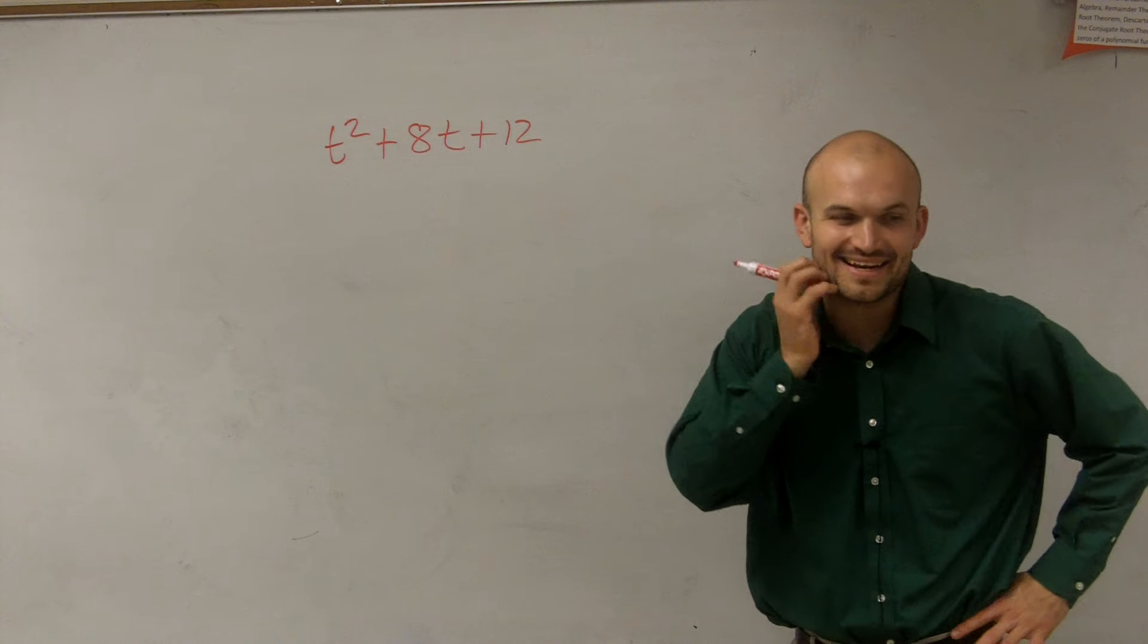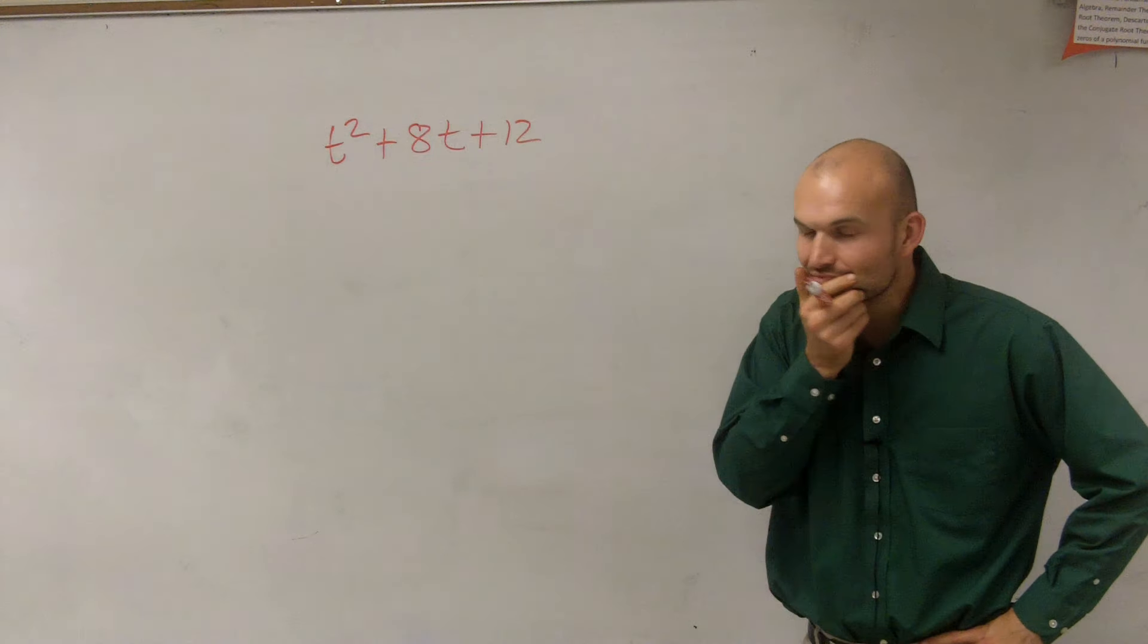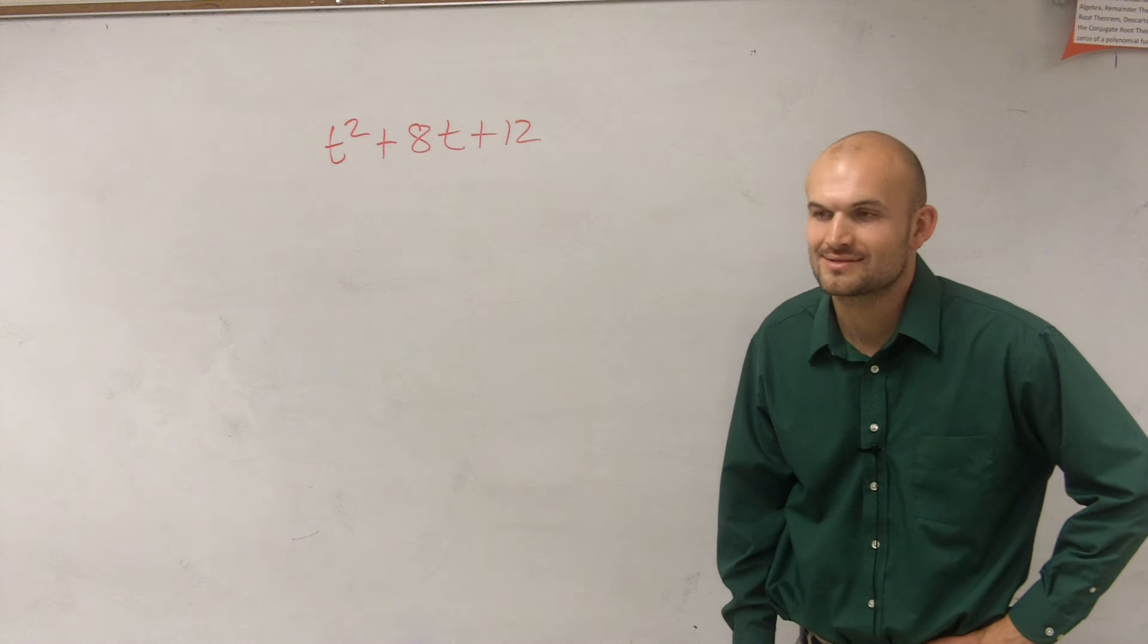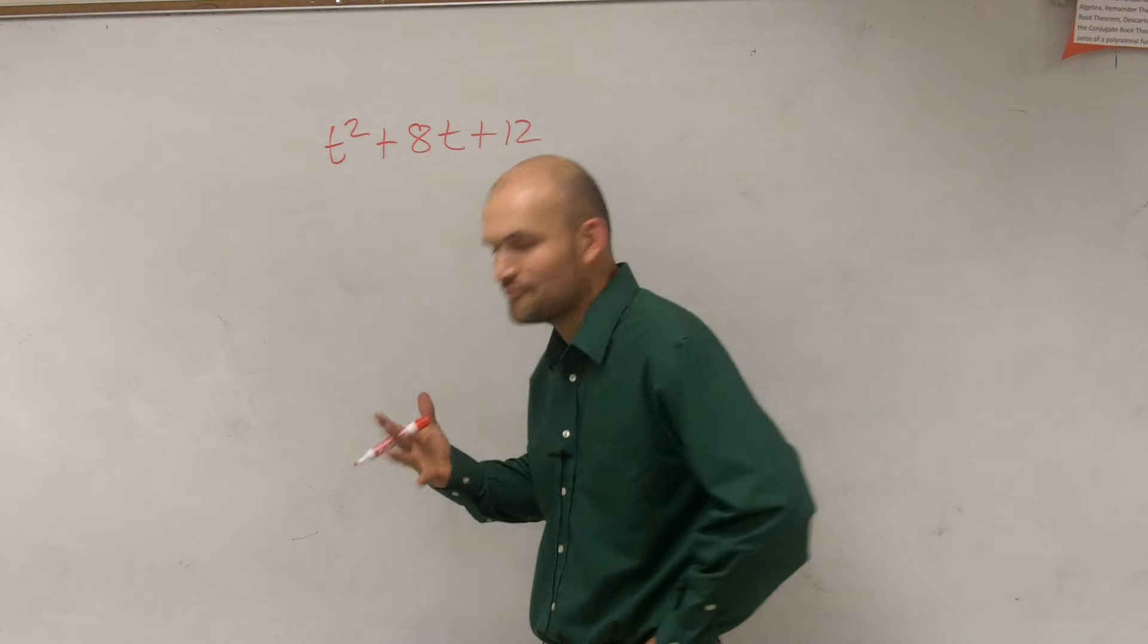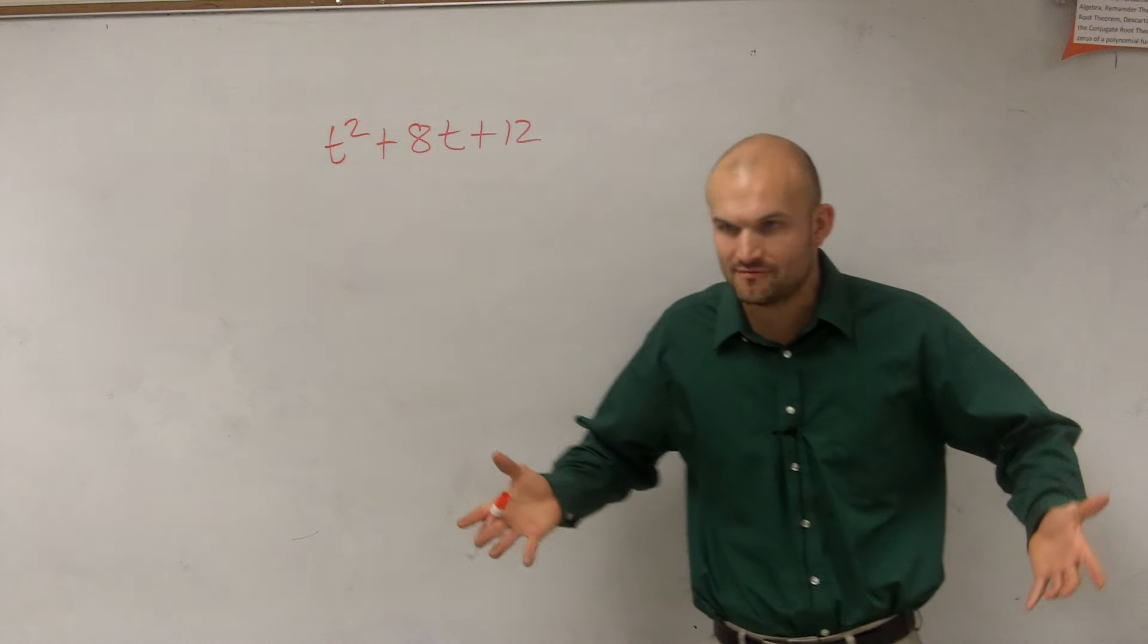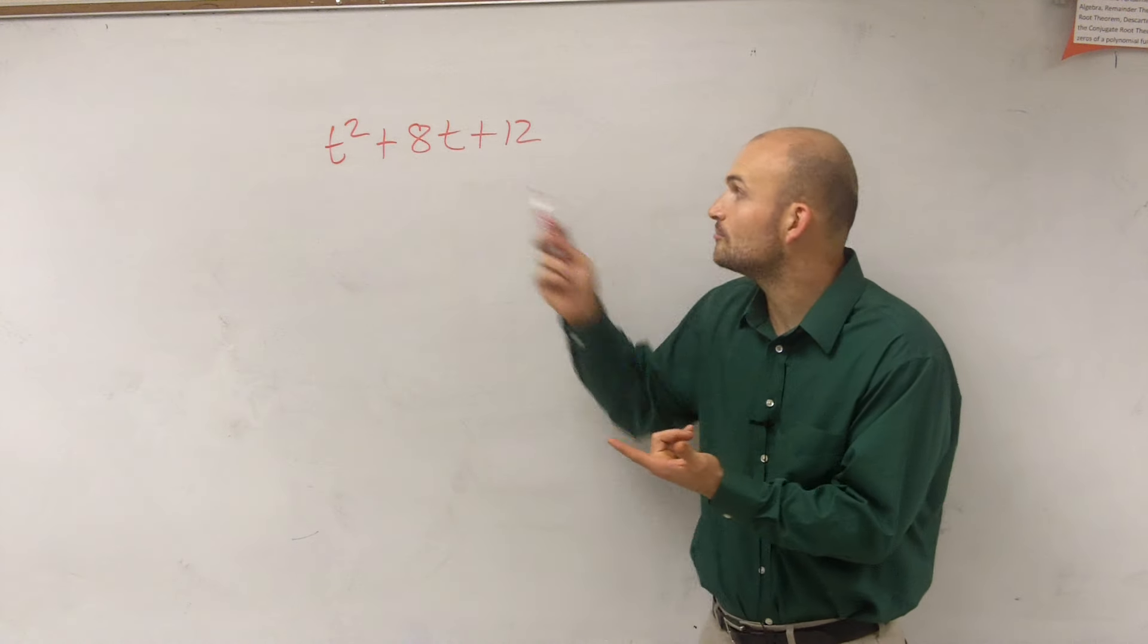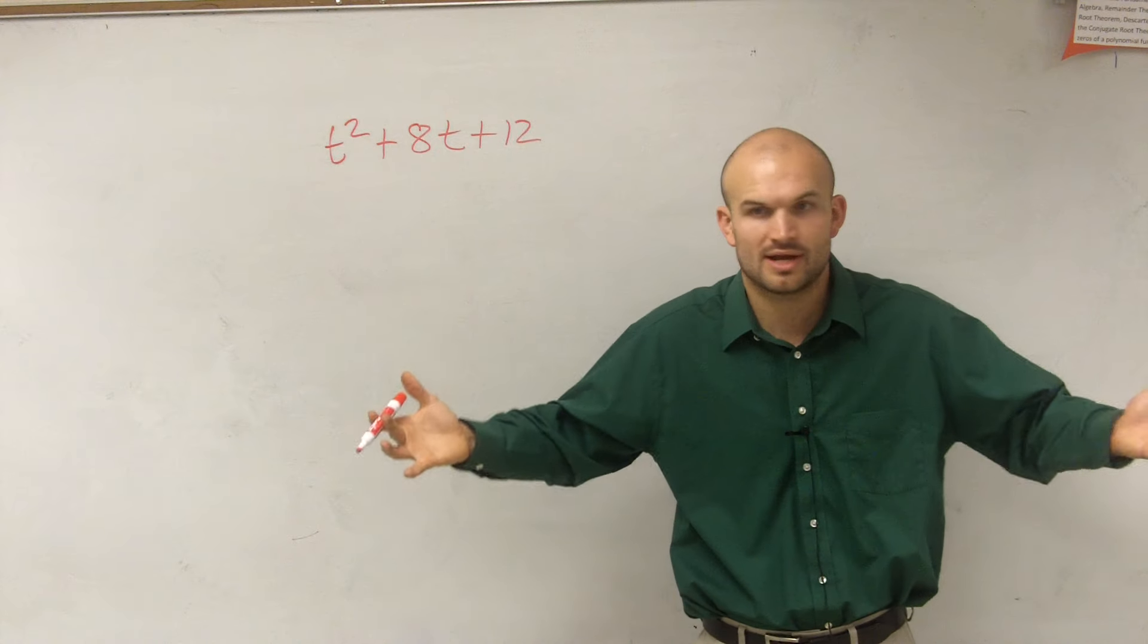So what we look at here is with this, we have t squared plus 8t plus 12. What we're going to do is factoring. And what we previously factored on factoring, we took a number and we broke it down into its prime factors, right?